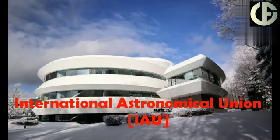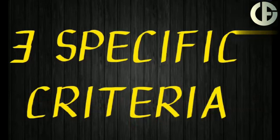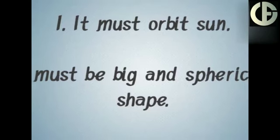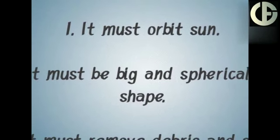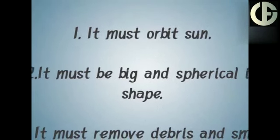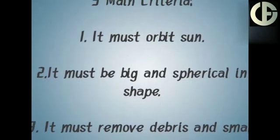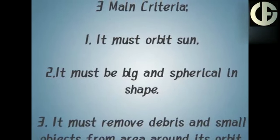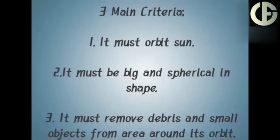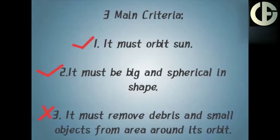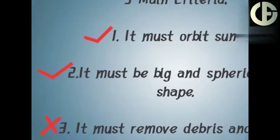The International Astronomical Union meets three specific criteria to consider a celestial object as a planet. Firstly, it must orbit around the sun. Secondly, it must be big enough to be in spherical shape. And third, it has to remove debris and small objects from the area around its orbit. Well, only one and two cases are applicable for dwarf planets, but not the third. Hence it is considered to be dwarf.